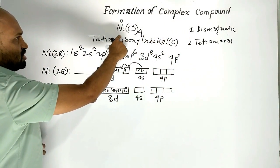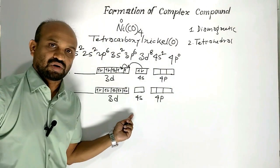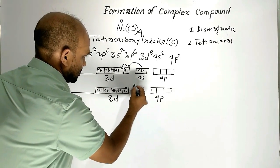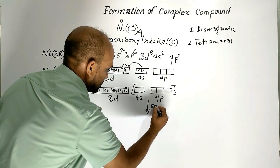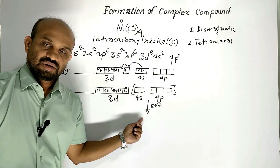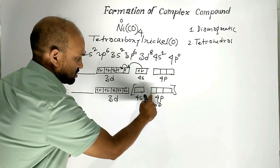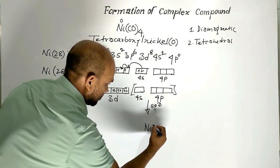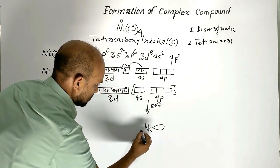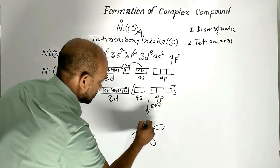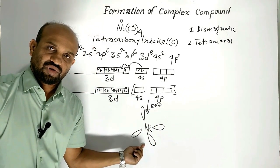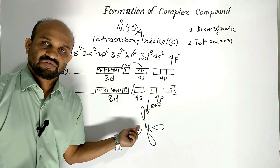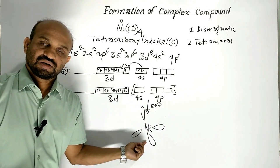Tetracarbonyl nickel is a tetrahedral-shaped complex compound. Why tetrahedral? In this case, nickel undergoes sp3 hybridization. That is why this is tetrahedral in shape. Four hybrid orbitals are formed — four orbitals participate in hybridization, and after hybridization four orbitals are formed which are arranged in a tetrahedral shape.